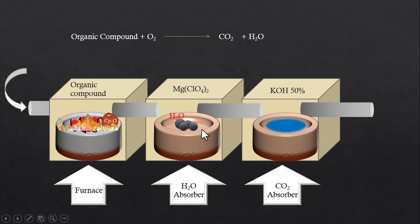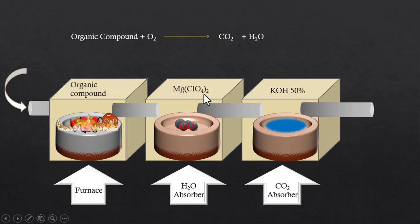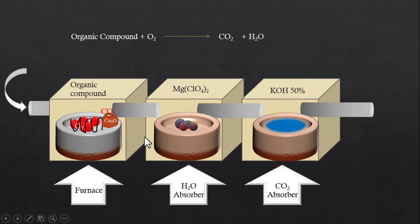The water moves into the next chamber where magnesium chloride is kept. Magnesium chloride absorbs the moisture. It must also be noted that magnesium chloride is weighed before the experiment so that we can determine the amount of water absorbed. We can also use calcium chloride in place of magnesium chloride for water absorption.